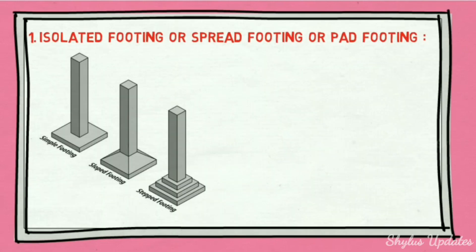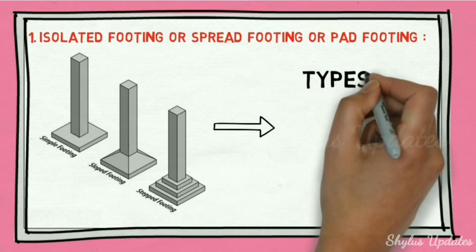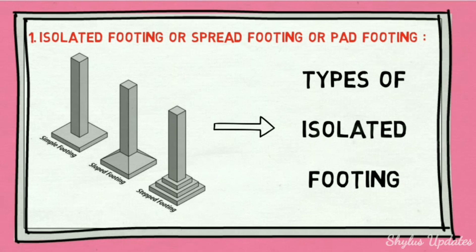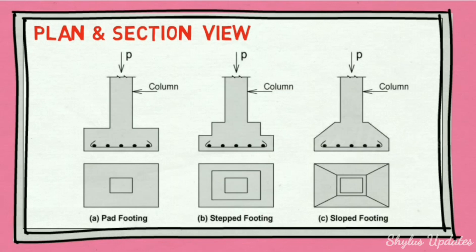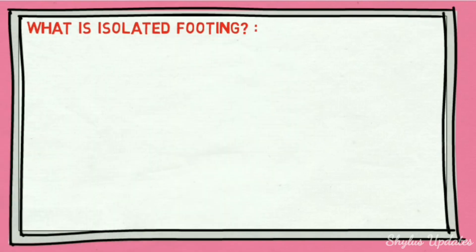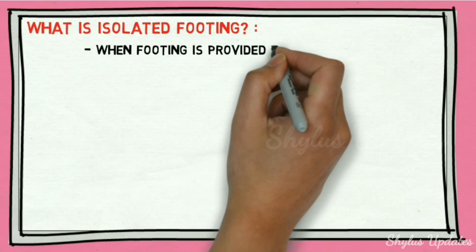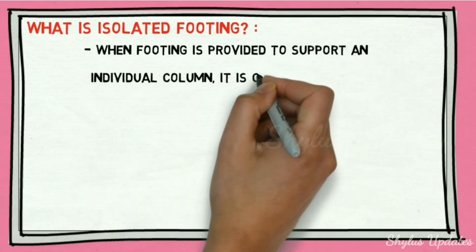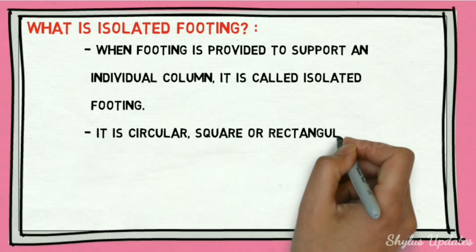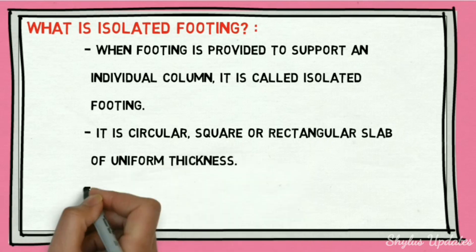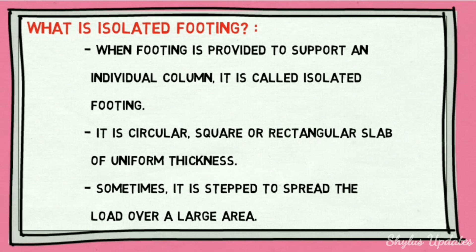Isolated footing — also called spread footing or pad footing — comes in three forms: simple footing, stepped footing, and sloped footing. When a footing is provided to support an individual column, it is called isolated footing. It is a circular, square, or rectangular slab of uniform thickness, sometimes stepped to spread the load over a large area.